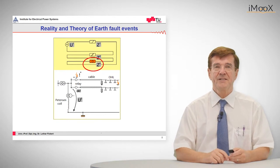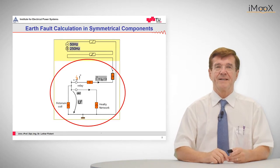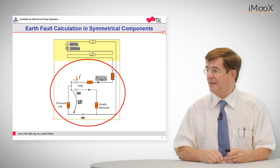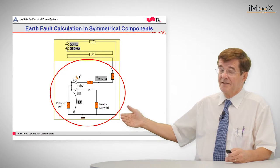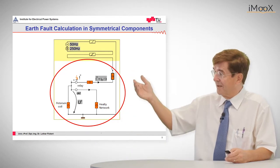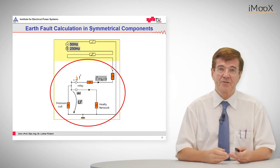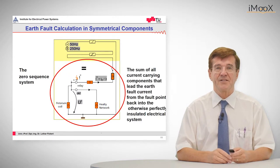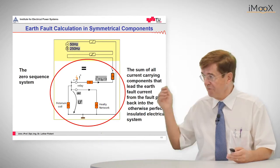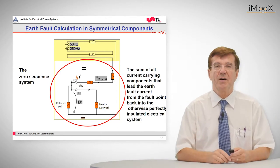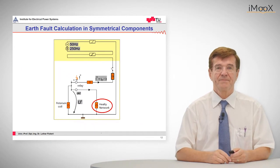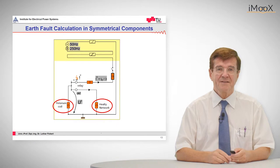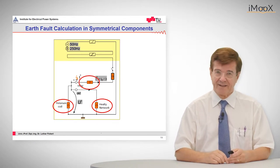This zero sequence impedance, as indicated in red, is represented in a more detailed way. It consists on the right side of the healthy network — that means the capacitances from ground to line. It is made up of the arc suppression coil or Petersen coil, and also the return path is important. The whole zero sequence system consists of the sum of all current-carrying components that lead the earth fault current from the fault point back into the otherwise perfectly insulated electrical system. The key factors are the healthy network, the arc suppression coil, and the line impedance.